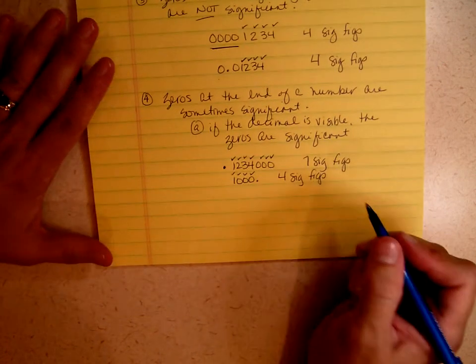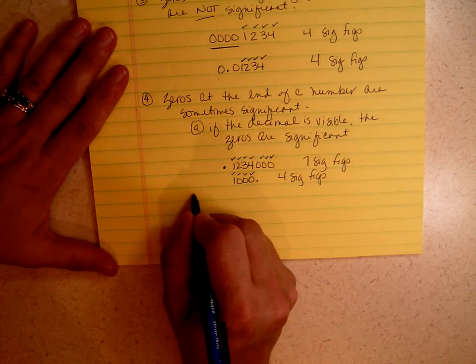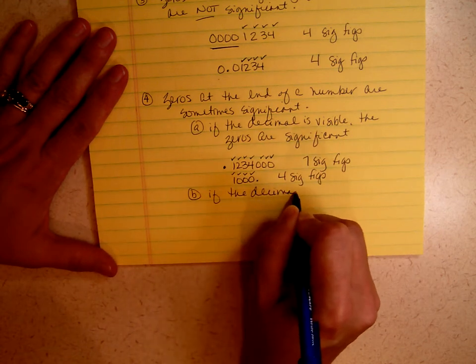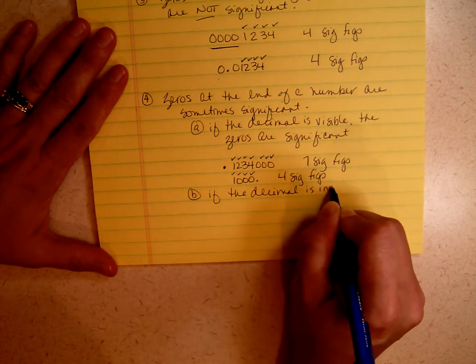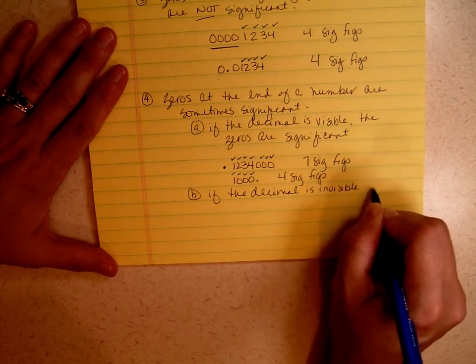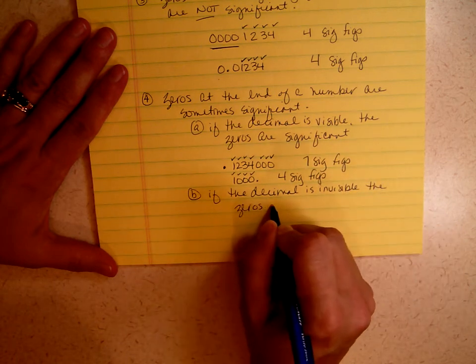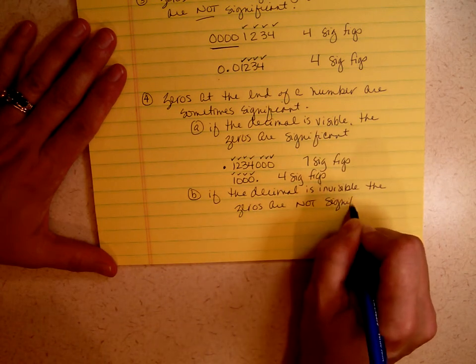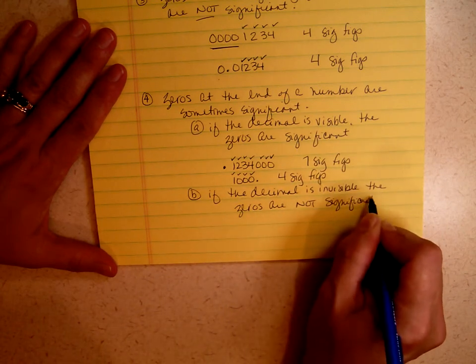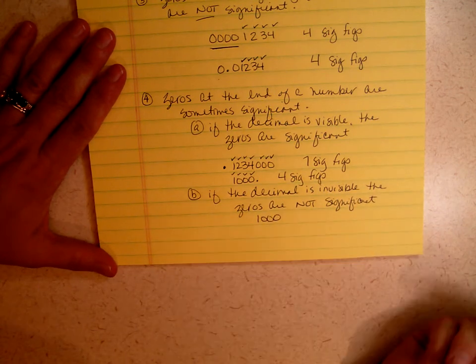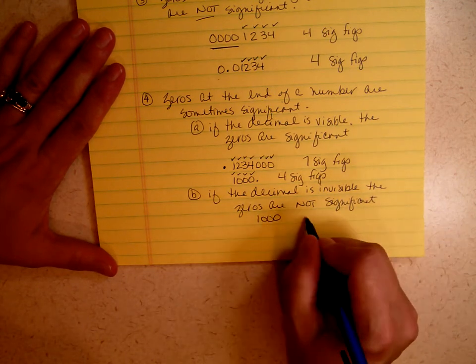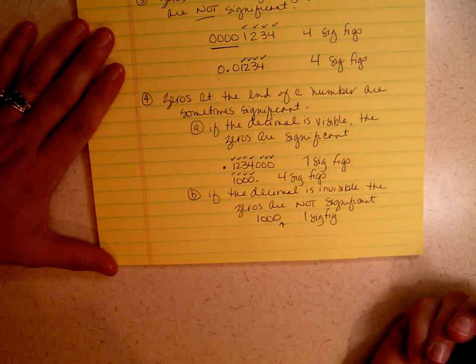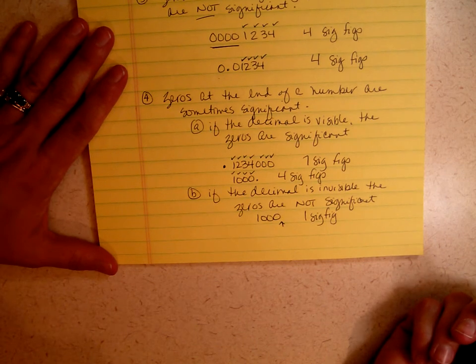Which only leaves us with one more thing to talk about. And that is, if the decimal is invisible, the zeros are not significant. I can't write today, but that's okay. You can read 1000. That has one sig fig. Why? Because the decimal is invisible. We do not see it.